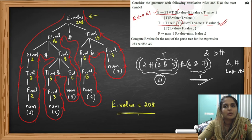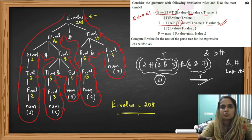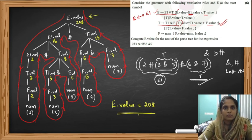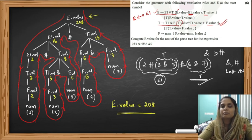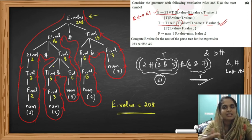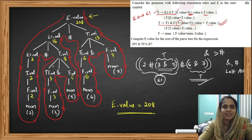This is how you solve problems related to syntax directed translation: draw the parse tree for the expression, walk through it, and whenever you see a reduction apply the corresponding translation rule. All attributes — E dot value, T dot value, F dot value — are synthesized attributes, because their values depend only on their children, not on siblings or parents. That's all about this question. Thank you.